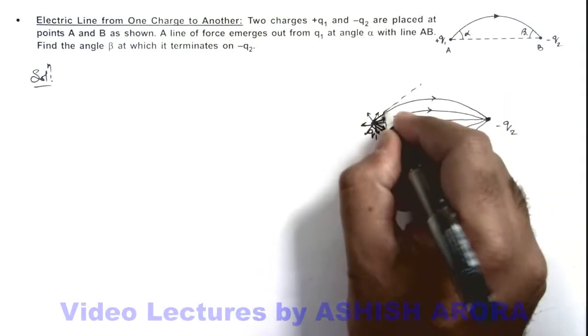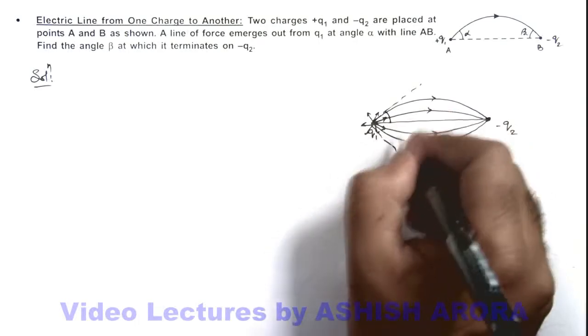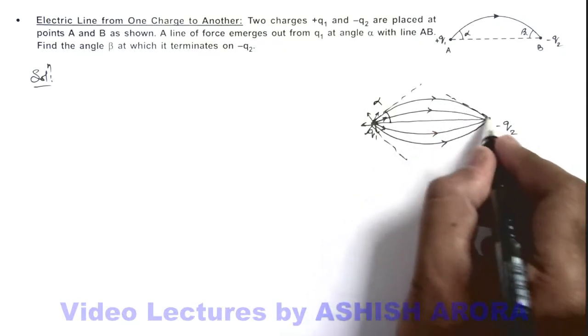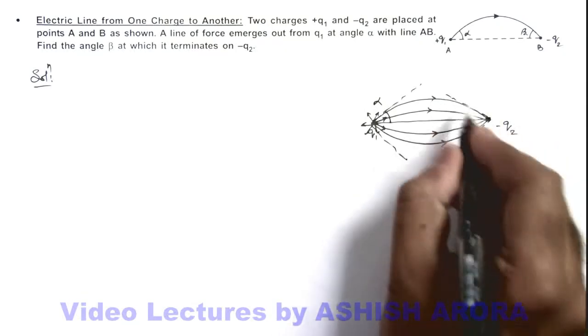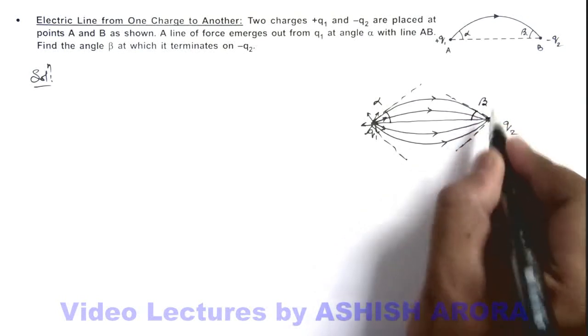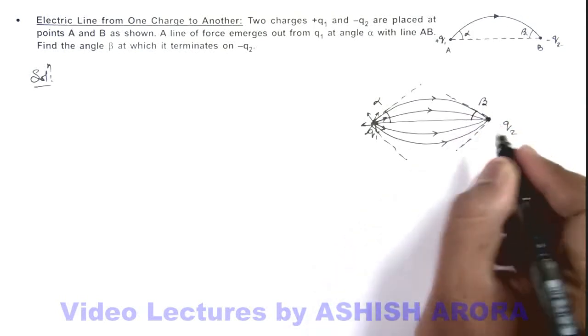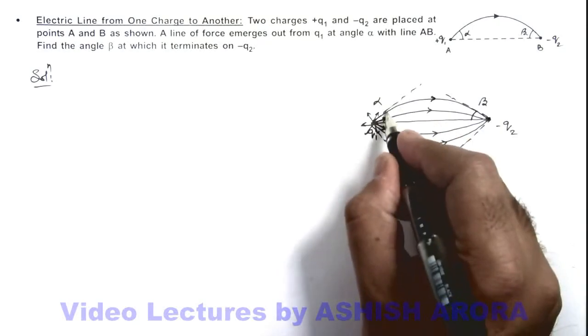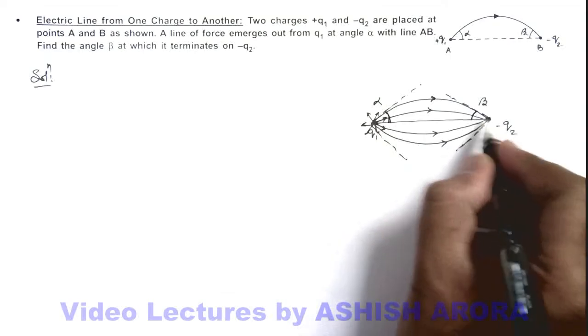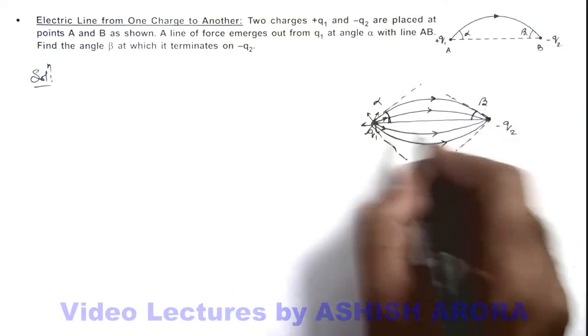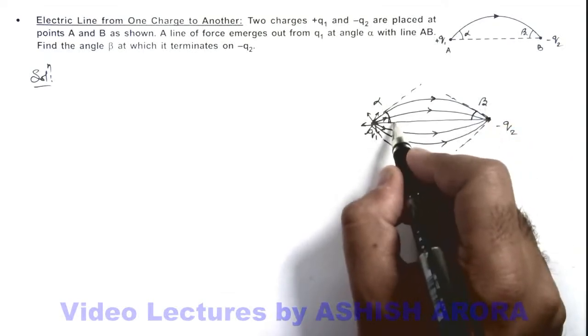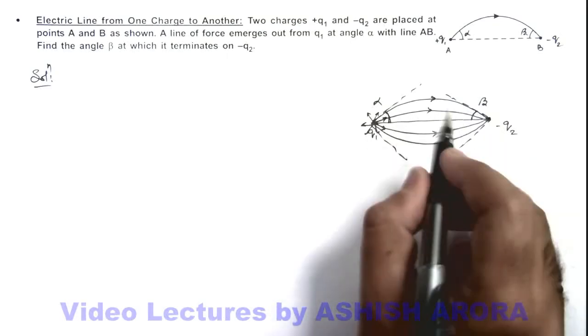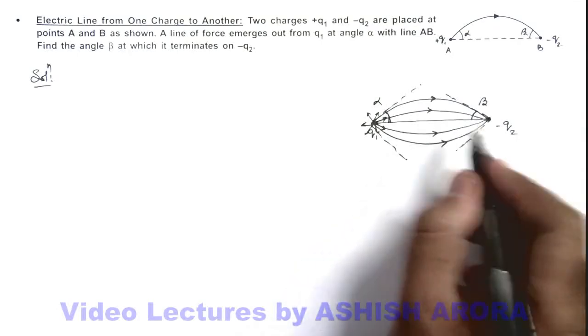If we consider this cone in which all the lines are originating with half angle of this cone as alpha, all these lines will terminate within another cone which is having half angle beta at point charge q2. Because one line of force which is originated at an angle alpha, if it is terminating at angle beta at minus q2, all the lines below this line will also be terminating on minus q2 because no electric line can cut each other.